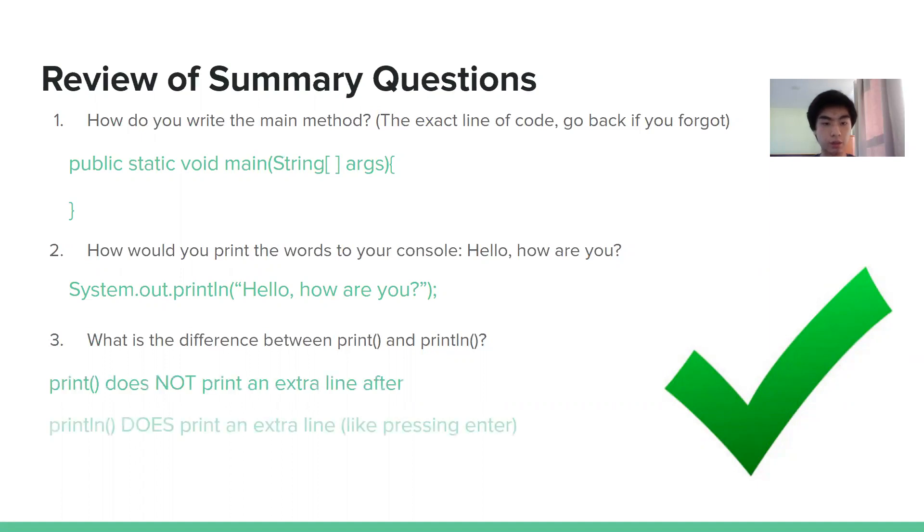Okay, and the difference between print and print line. Well, print line basically jumps the next line after you print your words. It's like pressing enter on your keyboard. It'll take your cursor down to the next line. So whatever you print after, if you call print line and print some words out, the next thing that you print will start on the next line. Whereas in print, it does not start on the next line. It will just start on the same line after you print.